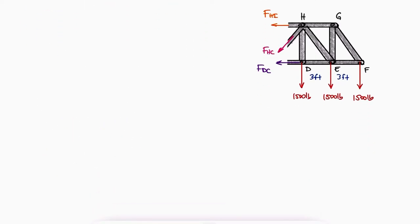Since the lines of action of FHI and FHC pass through H, we'll begin with the sum of moments about H. The line of action of the 1500-pound force on the left also passes through H. So the sum of moments about H will only have three terms, the one from FDC and the two 1500-pound forces on the right.